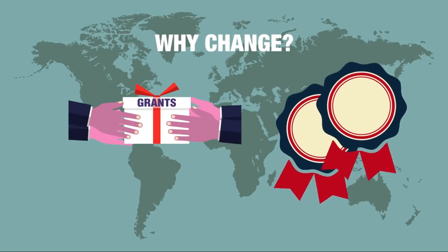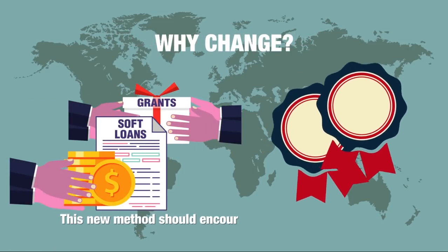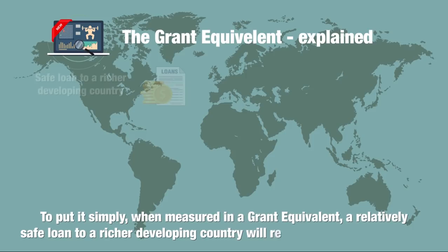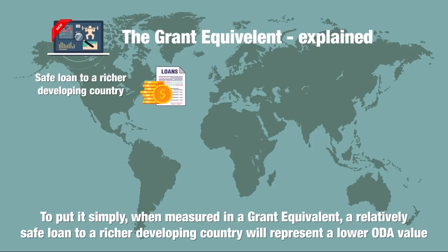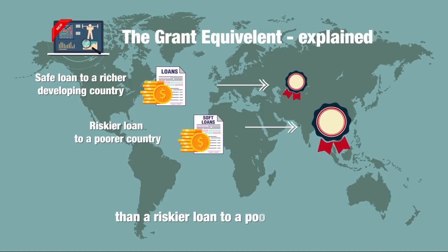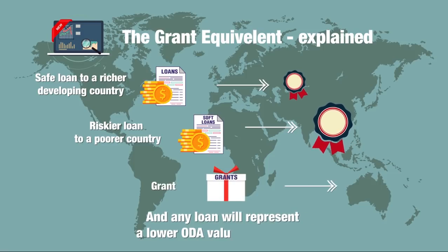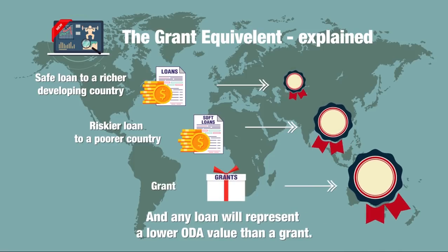Why change? This new method should encourage donors to extend grants and softer loans to poor countries. To put it simply, when measured in a grant equivalent, a relatively safe loan to a richer developing country will represent a lower ODA value than a riskier loan to a poorer country, and any loan will represent a lower ODA value than a grant.